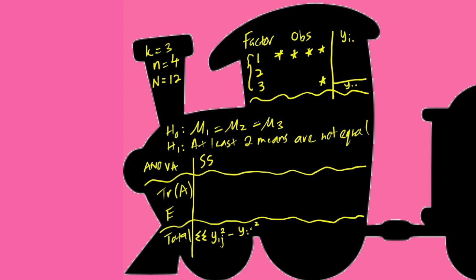Square the value divided by capital N. And the sum of squares of treatment would simply be 1 over number of observations multiplied by the sum of the squares of y i dot minus y dot dot over N.